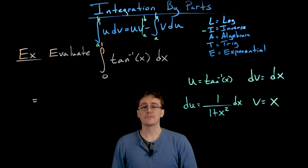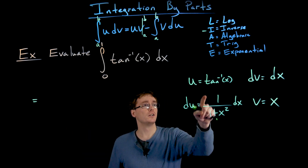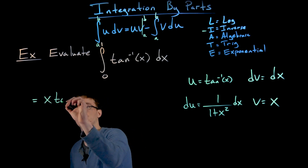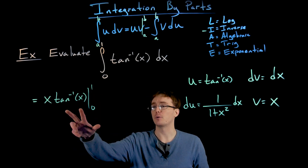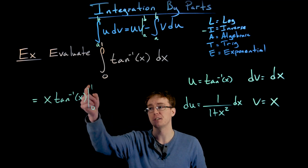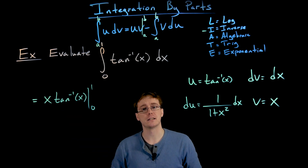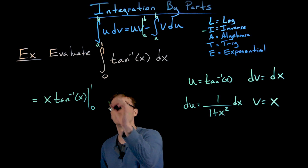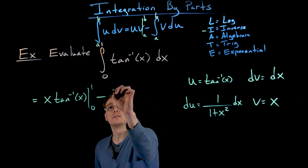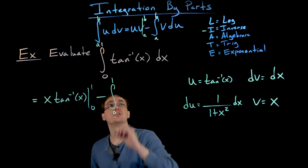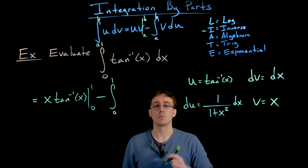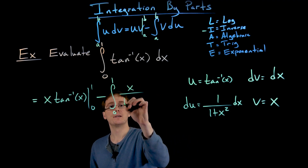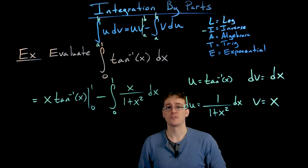Now we plug those four pieces into our formula. This gives us u times v — that's x times tangent inverse of x — evaluated at the upper and lower limits of integration, with the difference taken. Then we subtract the definite integral from 0 to 1 of v times du, which is x over 1 plus x squared, times dx.